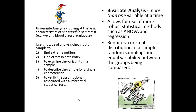In bivariate analysis, where we look at more than one variable at a time, we can use more robust statistical methods such as inferential tests — ANOVA, regression, and t-test. Of course, we have to make sure that our data is normally distributed, that the sample was collected randomly, and that there is equal variability between the groups being compared.